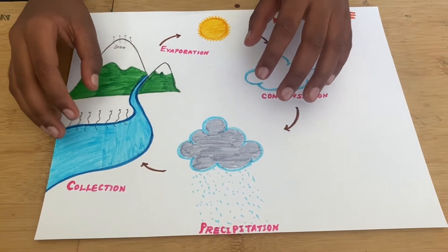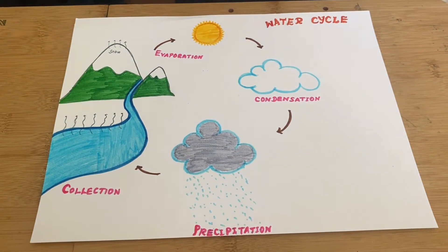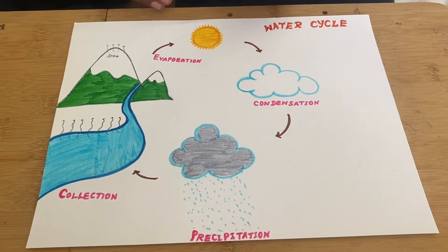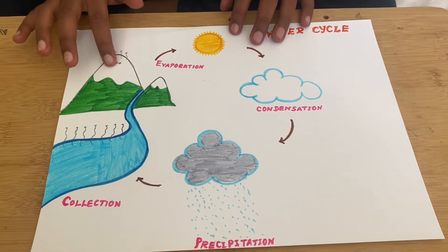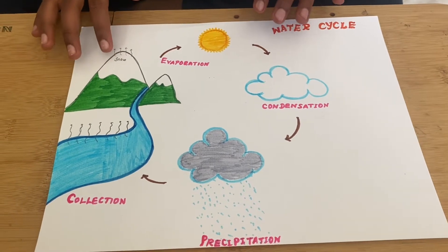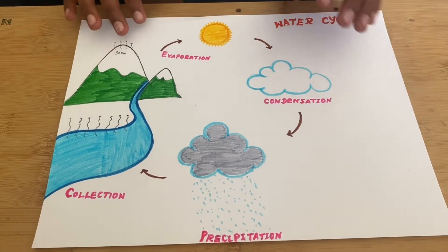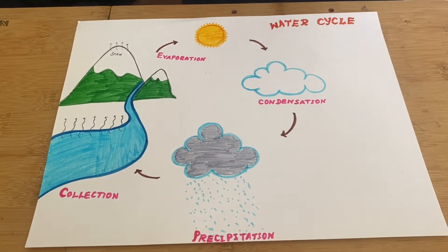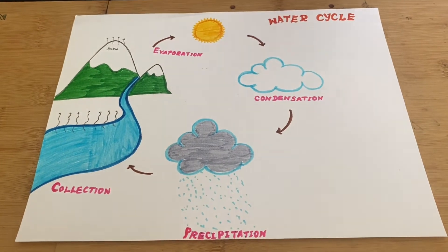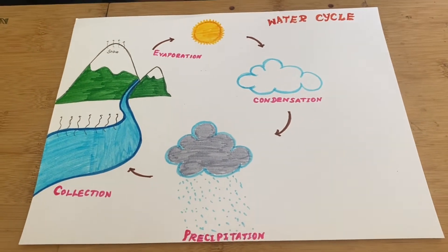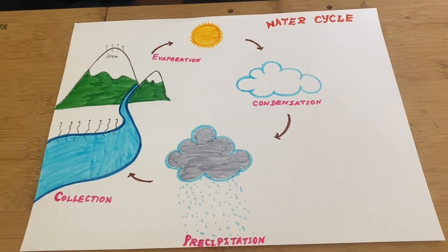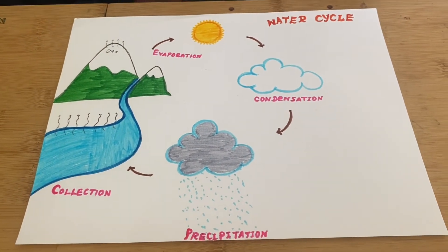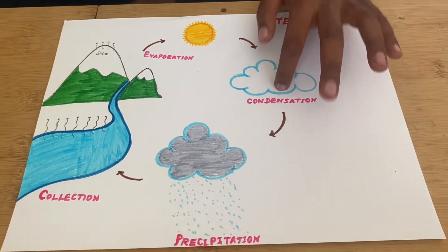So, the water evaporates into water vapor, which is called evaporation. The snow also evaporates. Then, the water vapor turns into clouds when it reaches a particular distance in the atmosphere, which is called condensation.